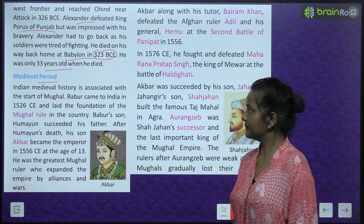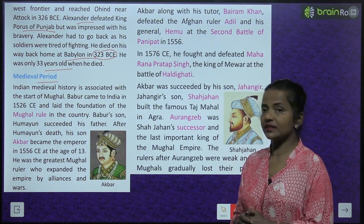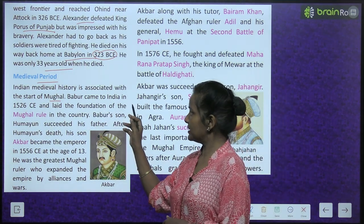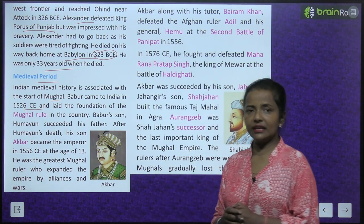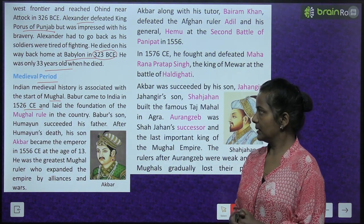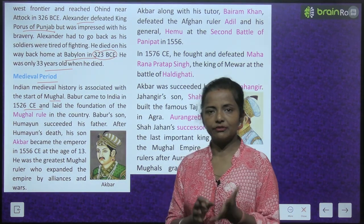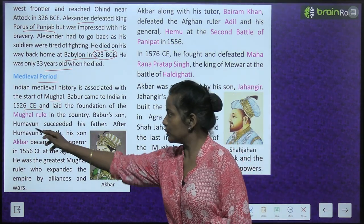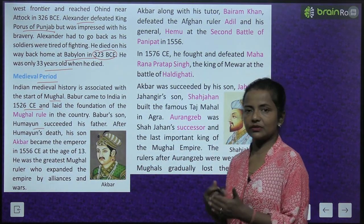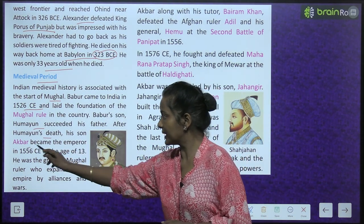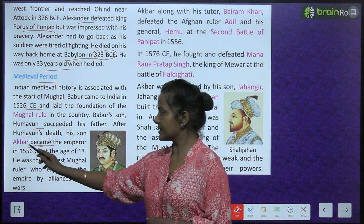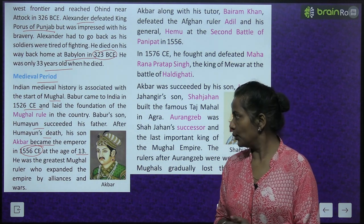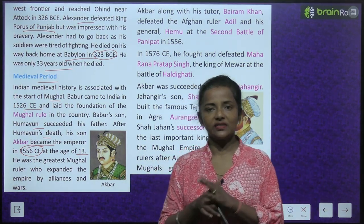Now the medieval period. Indian medieval history is associated with the start of Mughal rule. Babur came to India in 1526 CE and laid the foundation of Mughal rule in the country. Babur's son Humayun succeeded his father. After Humayun's death, his son Akbar became the emperor in 1556 CE at the age of 13.